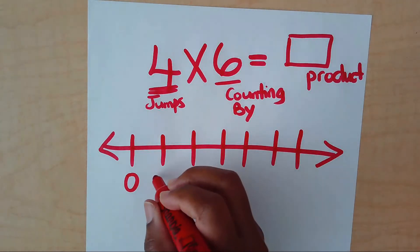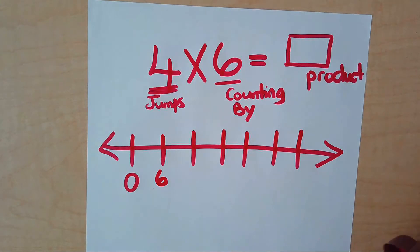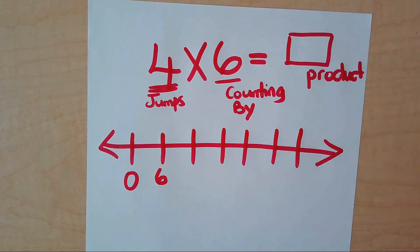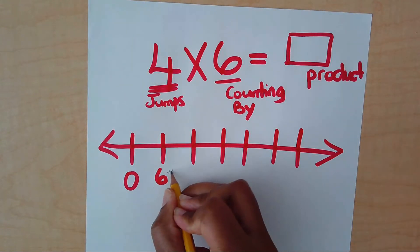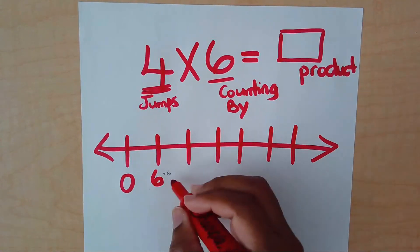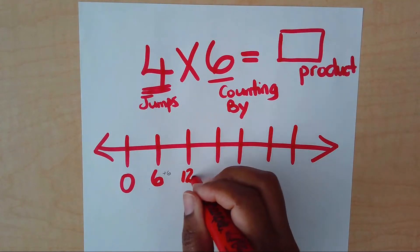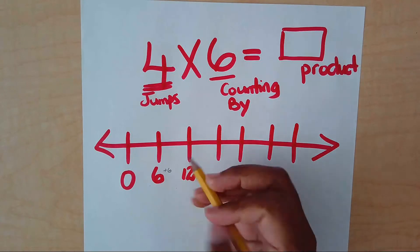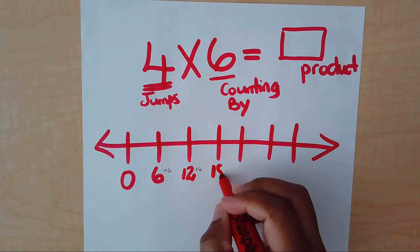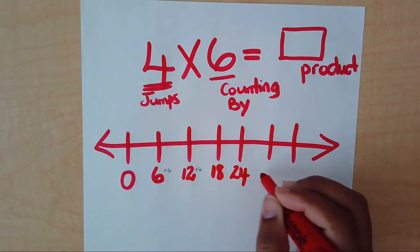So my first number will be six. This means that for every single number that I get, I am going to be adding a six to get to the next number. So six plus six, that's 12. 12 plus six, that's 18. 18 plus six is 24. 24 plus six is 30. 30 plus six is 36.